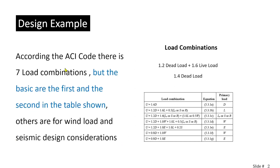According to SAI code, there are 7 load combinations, but the basic ones are the first and second: 1.4 dead load, and 1.2 dead plus 1.6 live plus 0.5 for roof, snow, or rain. Since we don't have roof, snow, or wind loads, we use 1.4 dead and 1.2 dead plus 1.6 live, and the largest one governs.